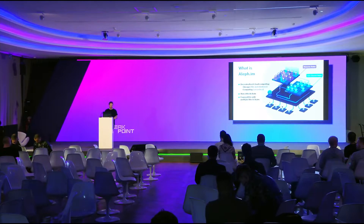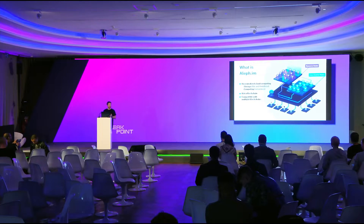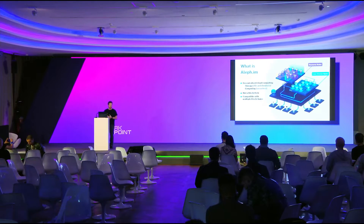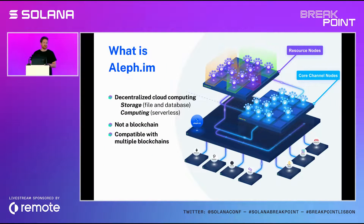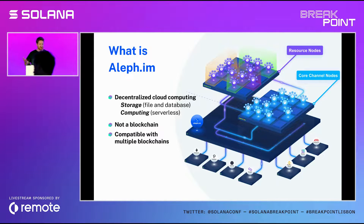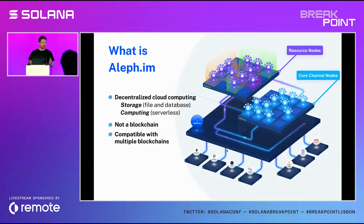A bit about us. So what's Aleph.im? It's a decentralized cloud computing platform. We provide storage — as in file storage and database storage — and computing, as in serverless computing. You can think of it as something like AWS Lambda or similar things. In a nutshell, it's like a decentralized AWS, Google Cloud, or whatever cloud platform you might know. Our network is not a blockchain — we don't have blocks, but we accept messages coming from blockchains.